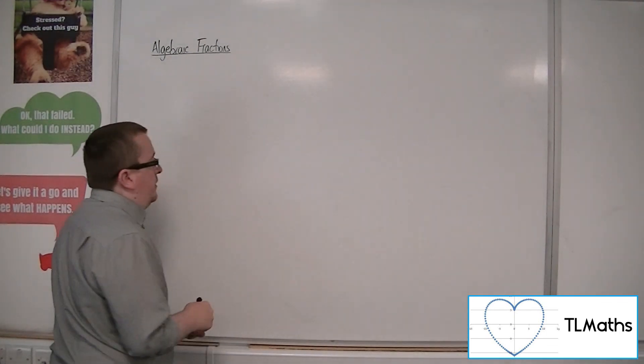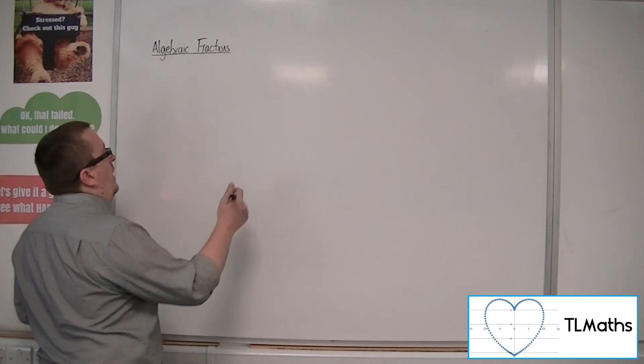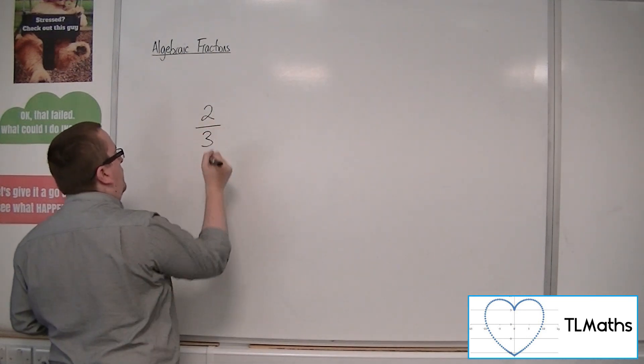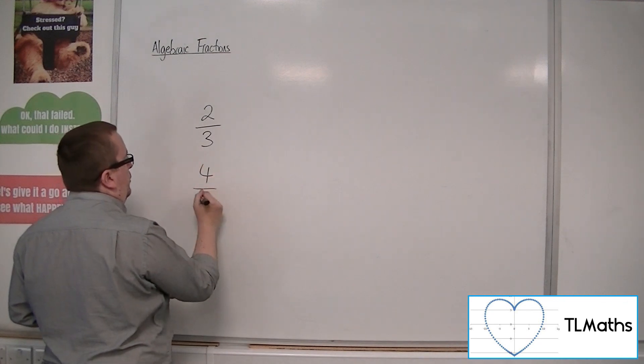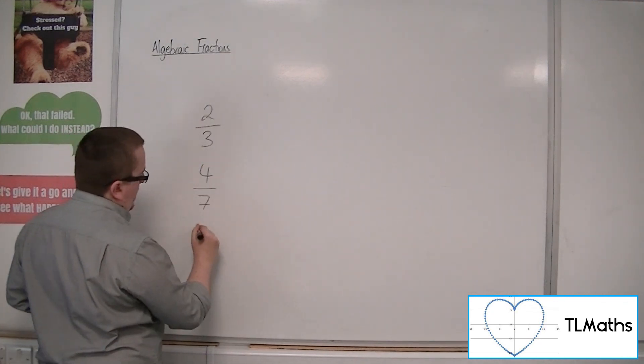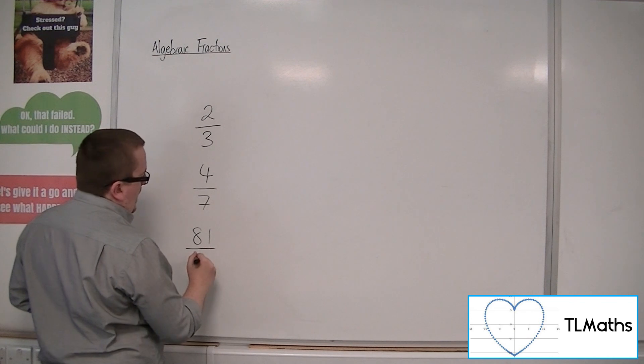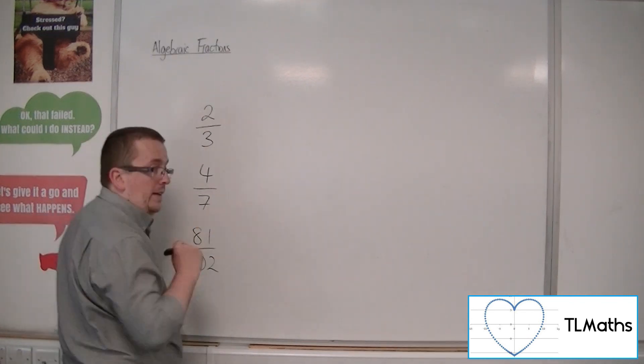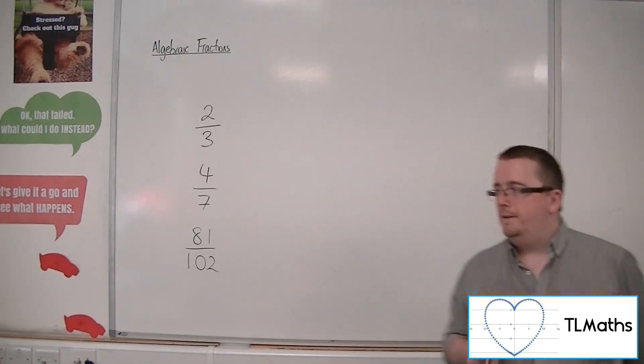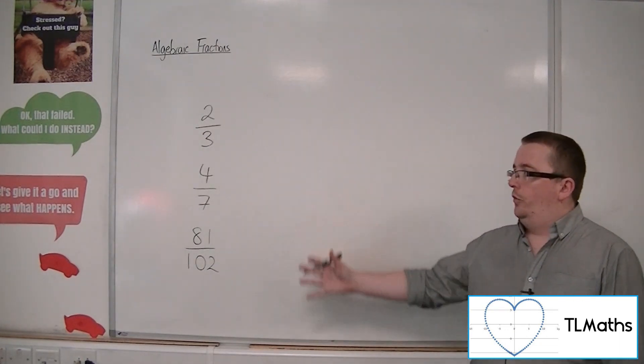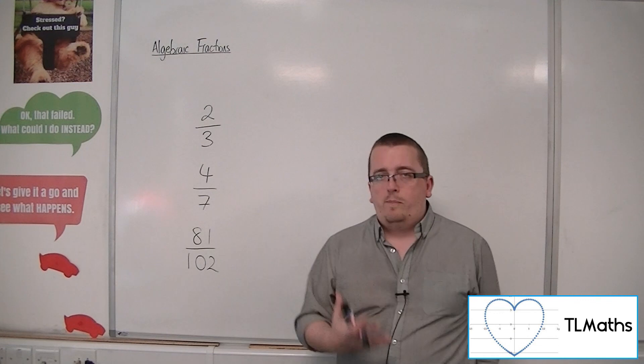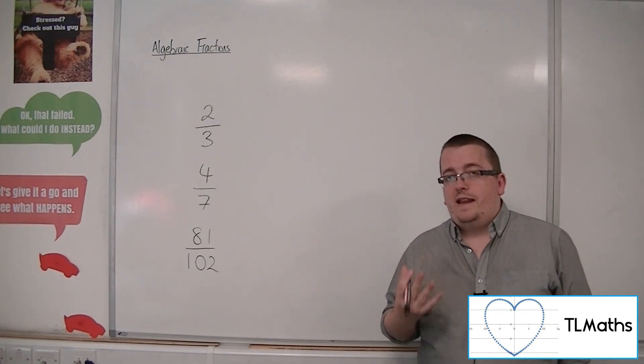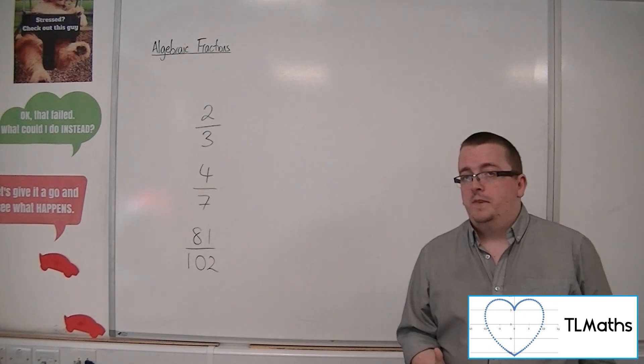that proper fractions are those where you have something like this: two-thirds, four-sevenths, or 81 over 102, for example. In all three of these cases, these are proper fractions because the numerator is less than the denominator.